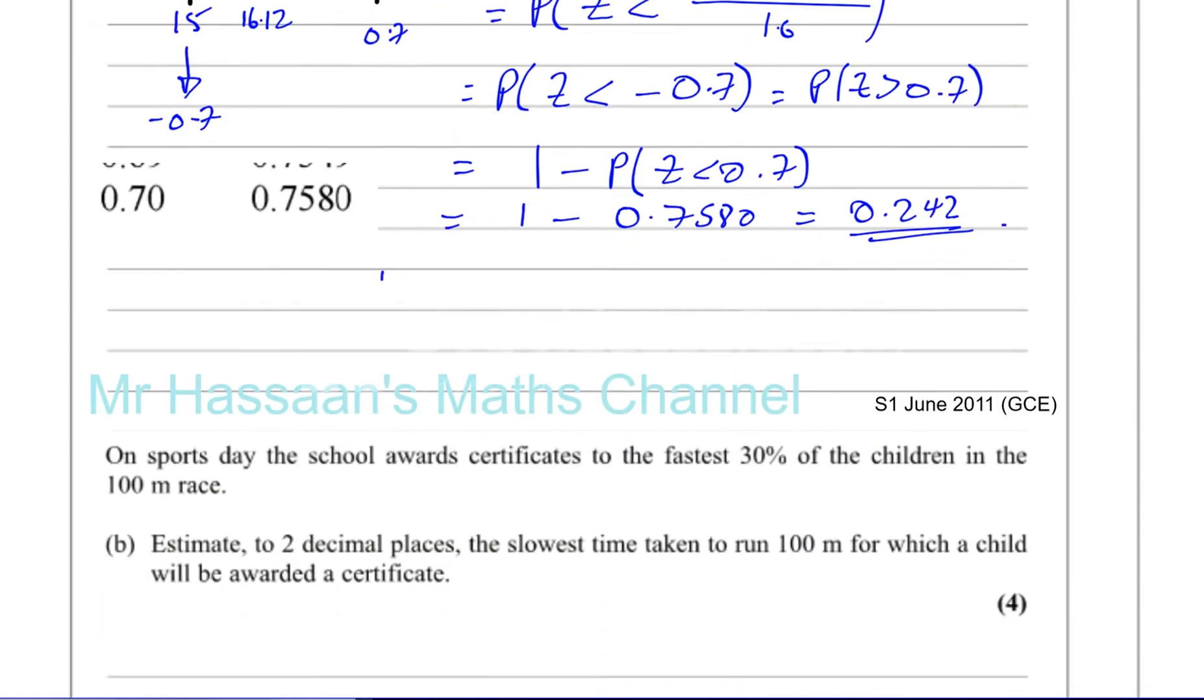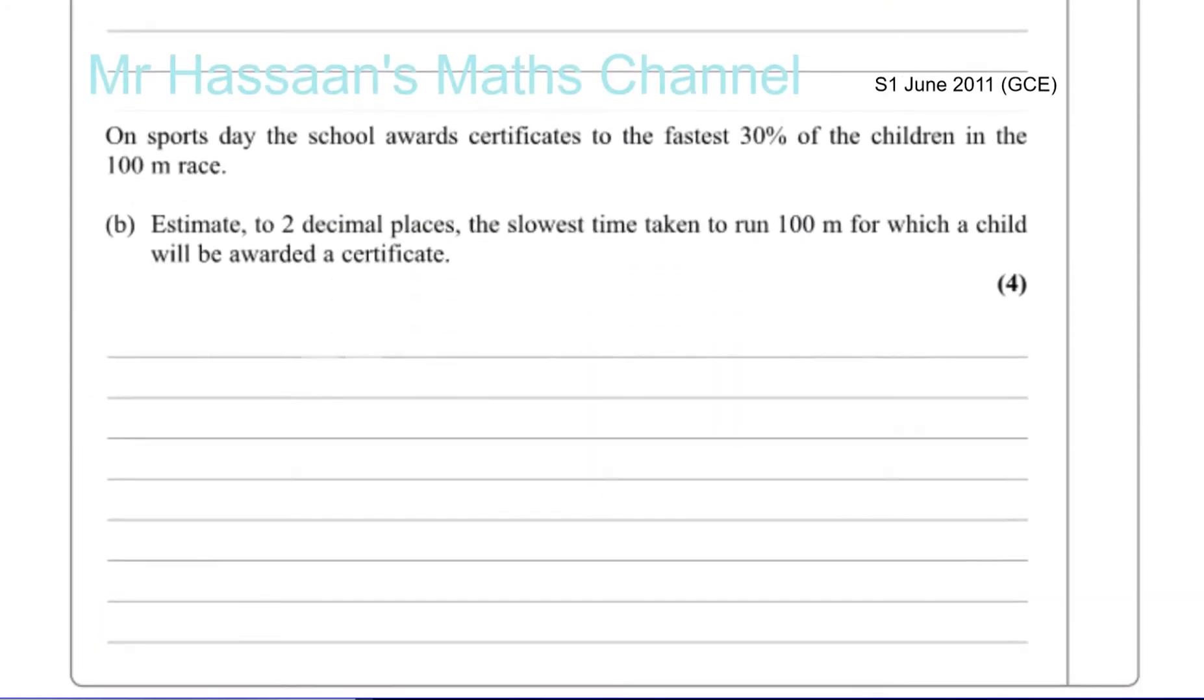Now part B says, on sports day, the school awards certificates to the fastest 30% of the children in the 100 meters race. Estimate to two decimal places the slowest time taken to run 100 meters for which a child will be awarded a certificate.